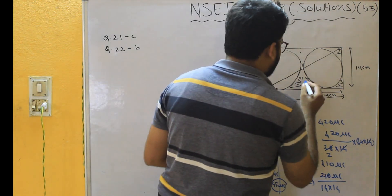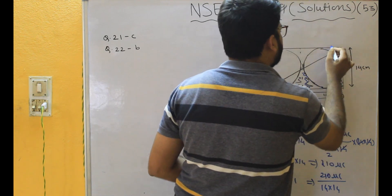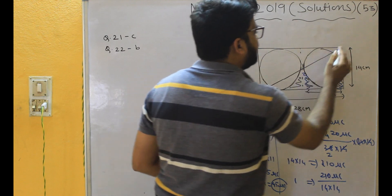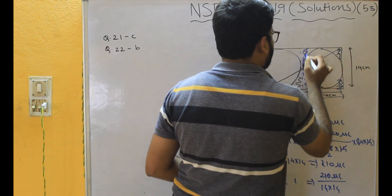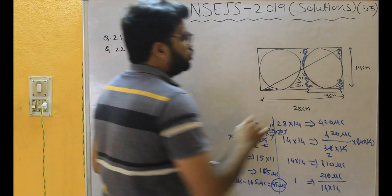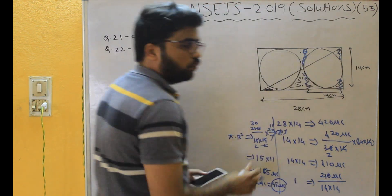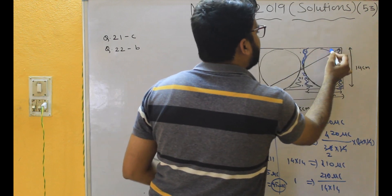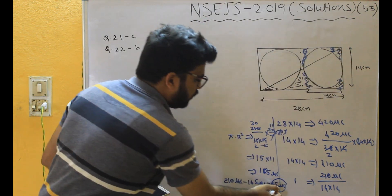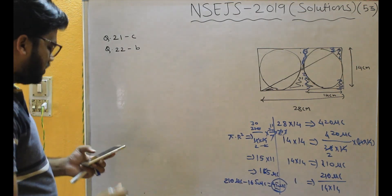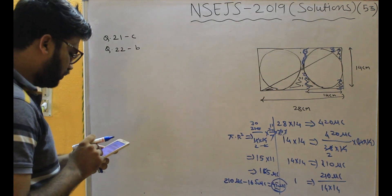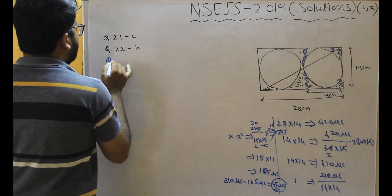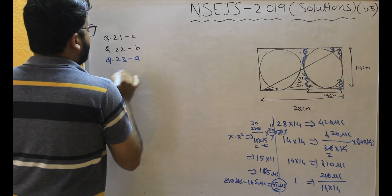That 45 microcoulombs corresponds to the corner areas — the shaded region. Counting the sections: one, two, three — only one part is left, which is exactly the shaded part. So 45 microcoulombs is the answer for question 23, and option A is correct.